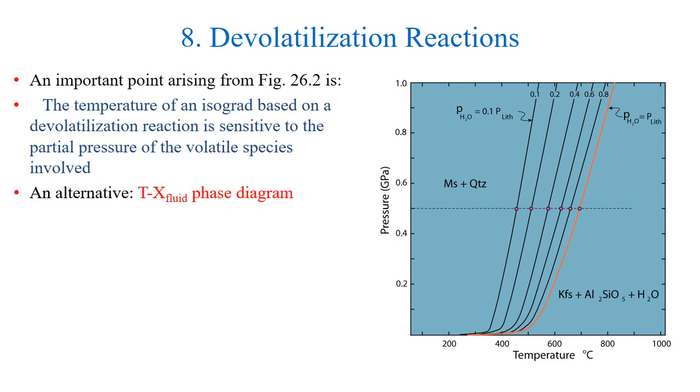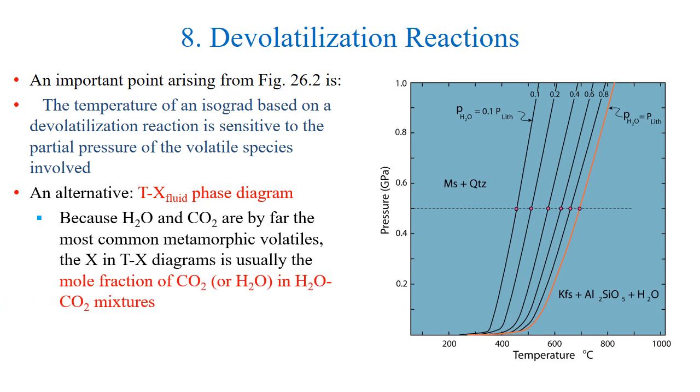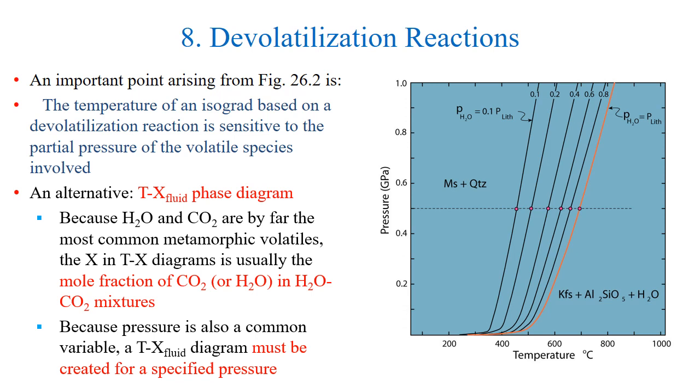An alternative is the temperature composition of the fluid phase diagram. Because water and carbon dioxide are by far the most common metamorphic volatiles, the x in the Tx diagrams usually is the mole fraction of carbon dioxide or water in the H2O-CO2 mixture. Because pressure is also a common variable, a Tx fluid diagram must be created for a specific set of pressure conditions.